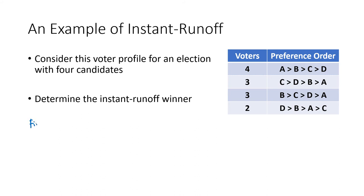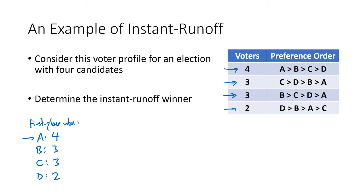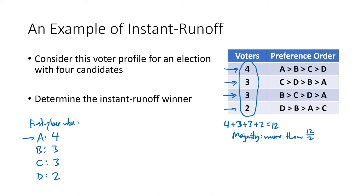Working through an example with candidates A, B, C, and D: A has four first place votes, C has three, B has three, and D has two. The total is 12 voters, so a majority requires seven or more votes. No one has that many, so we eliminate D — the candidate with the fewest first place votes — but we keep those voters and look at their next preference.